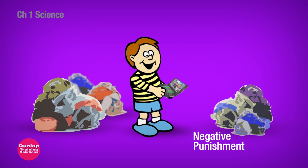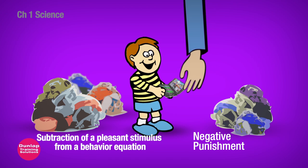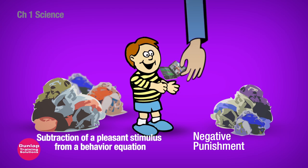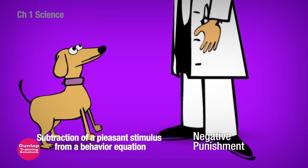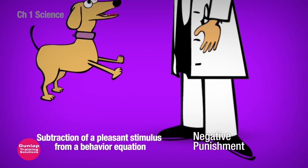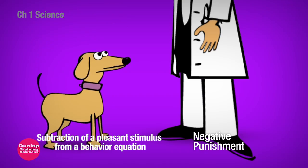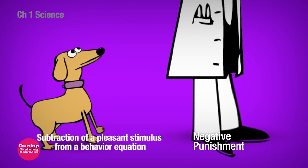Negative punishment is the subtraction of a pleasant stimulus from a behavior equation. A child does something you don't like, so you take away his games or his toys — you might use a timeout. For a dog, negative punishment means withholding a reward for a bad behavior, like not following through on a command.